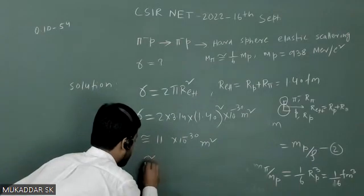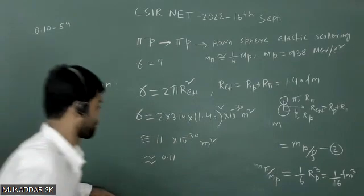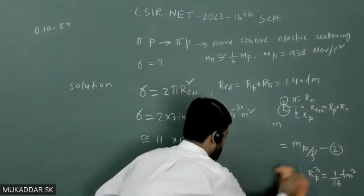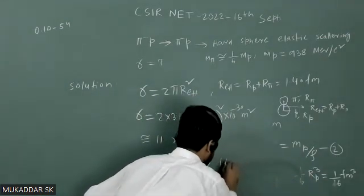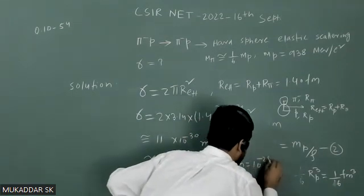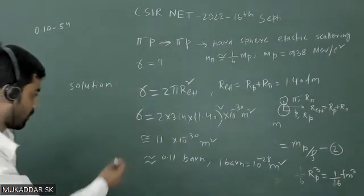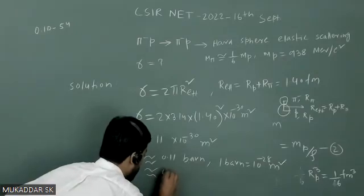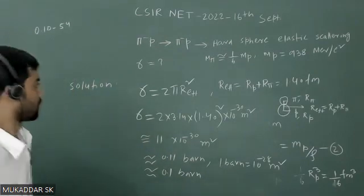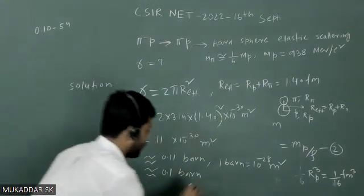So this is close to approximately 11 barn, because 1 barn is nothing but 10^(-28) meter square. So the correct option is the total scattering cross section for this hadron scattering is 11 barn.